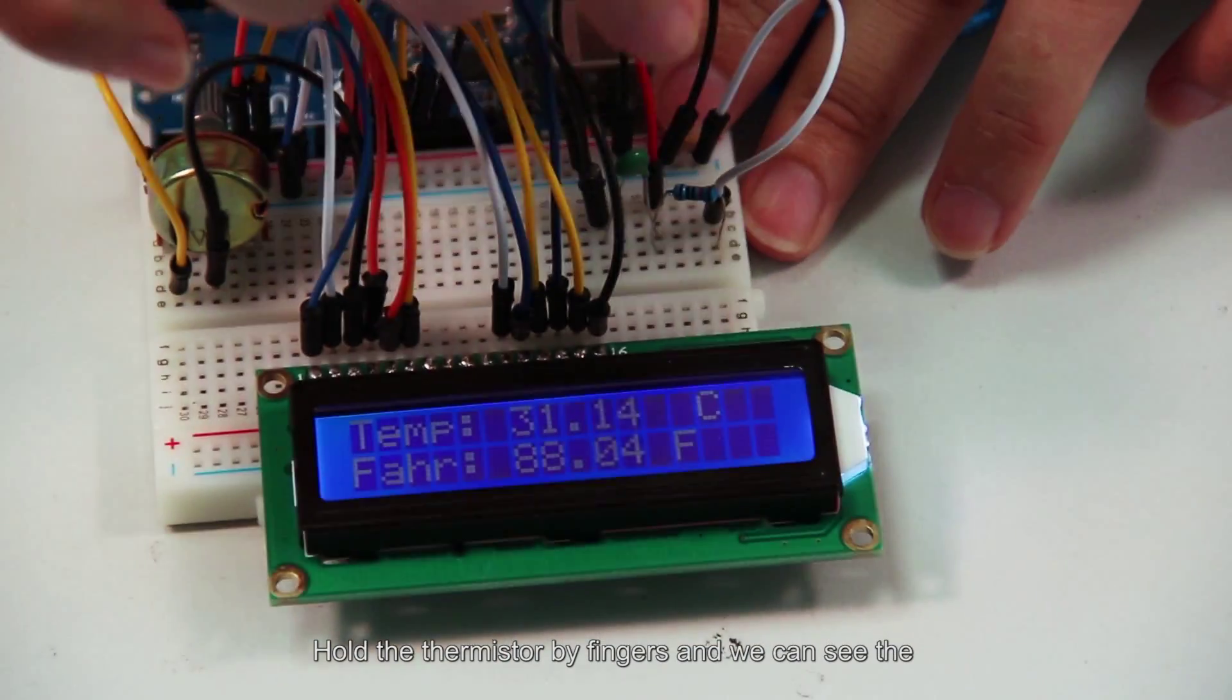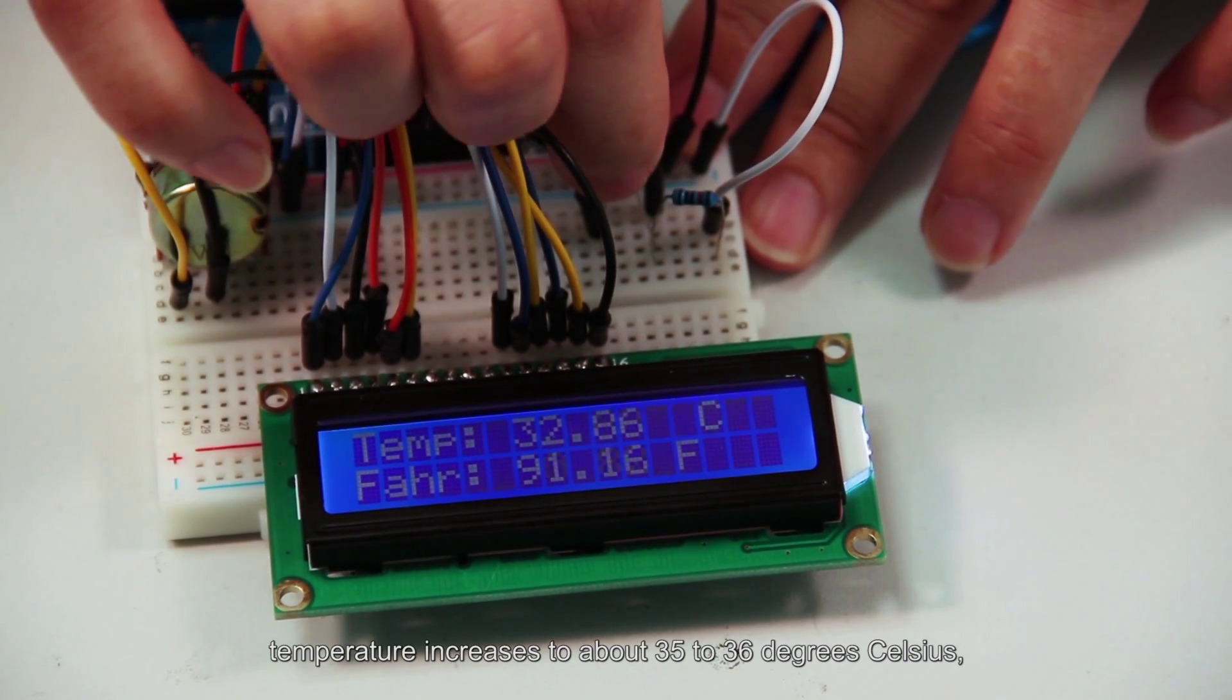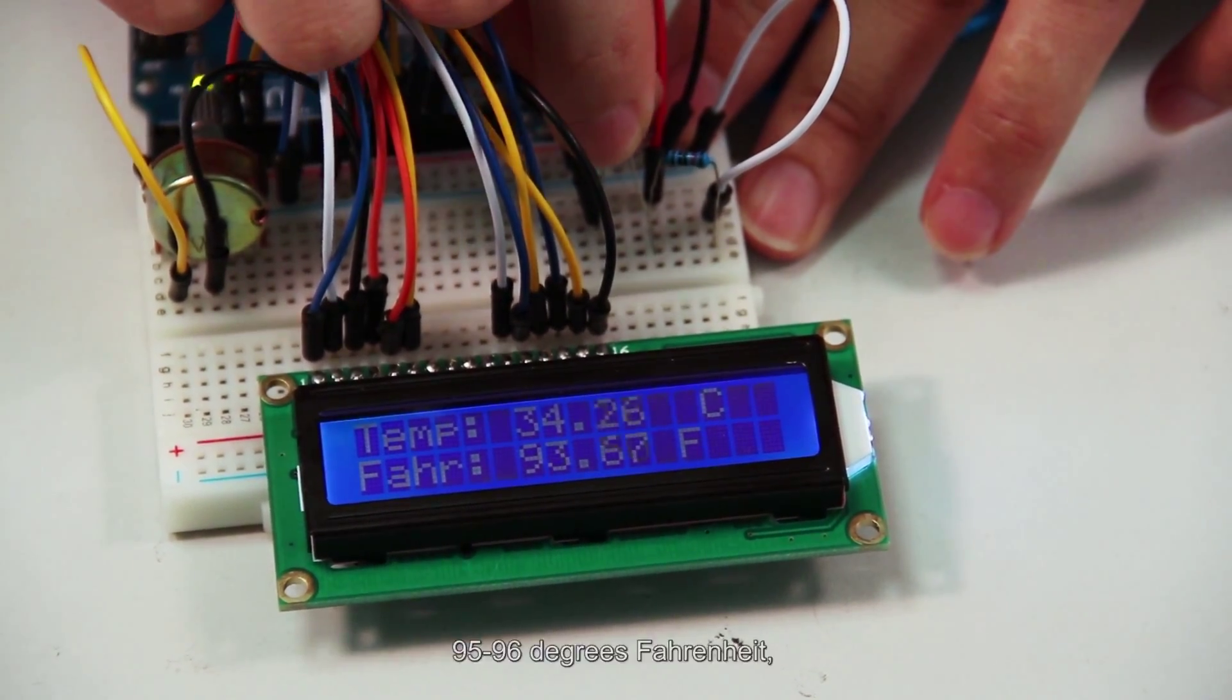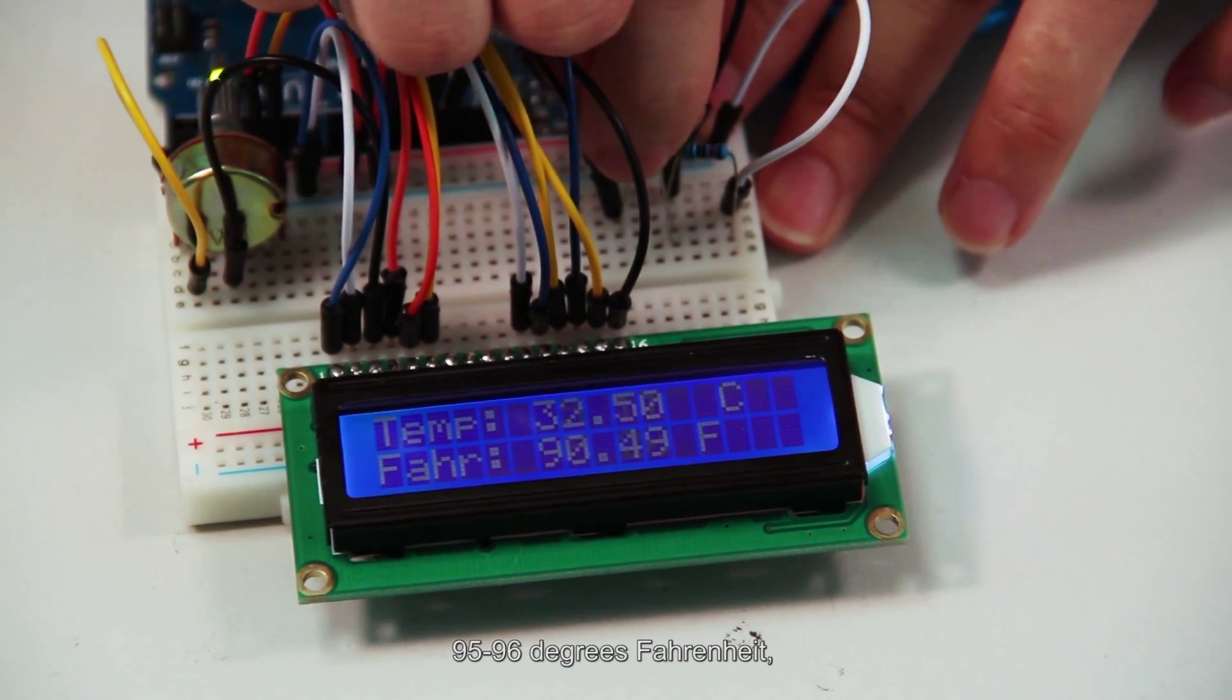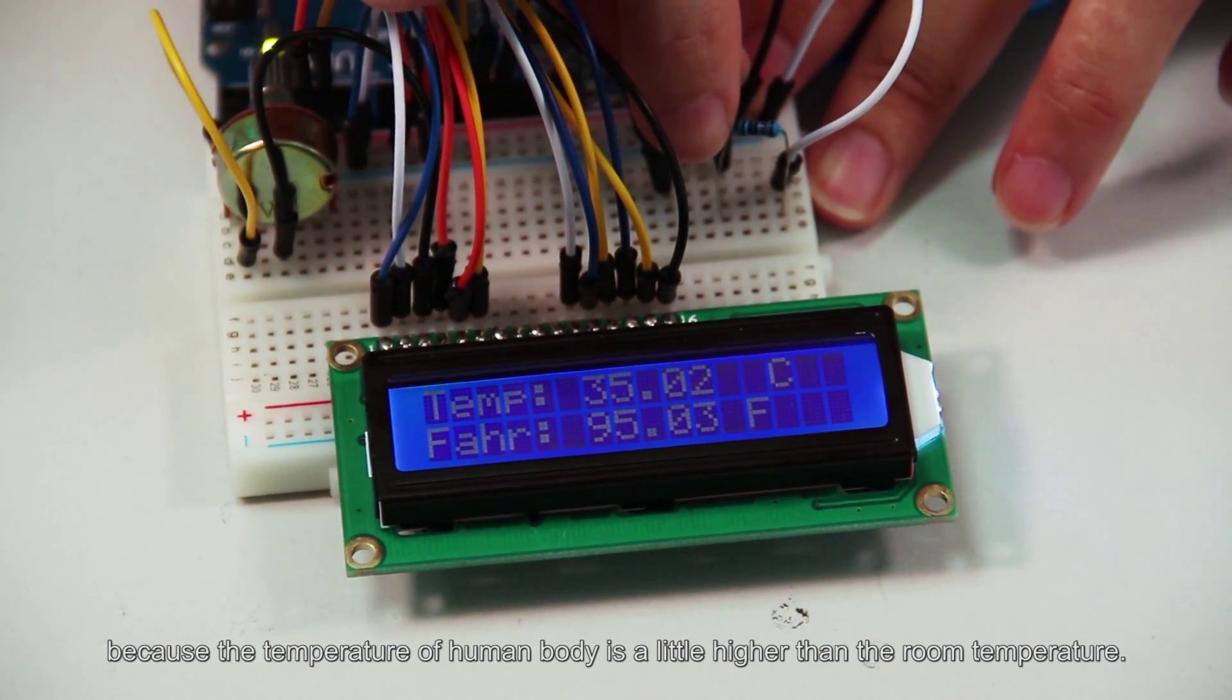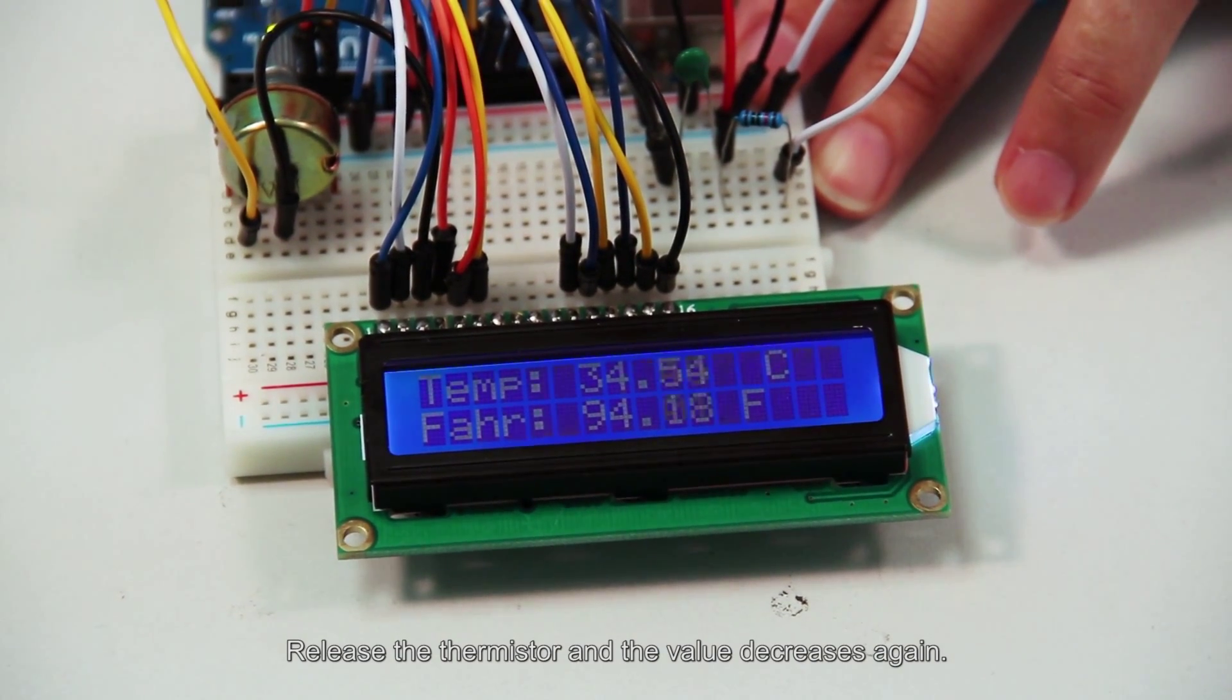Hold the thermistor by fingers and we can see the temperature increases to about 35 to 36 degrees Celsius, 95 to 96 degrees Fahrenheit, because the temperature of the human body is a little higher than the room temperature. Release the thermistor and the value decreases again.